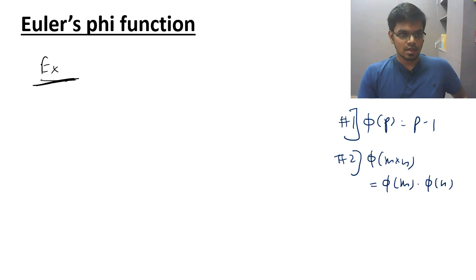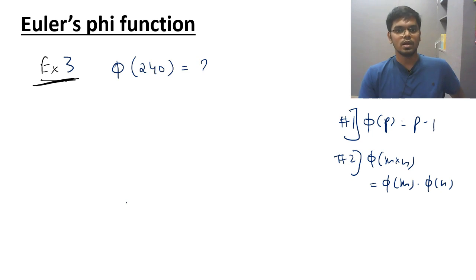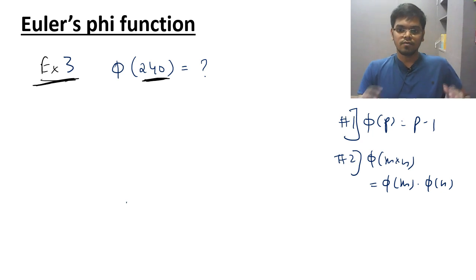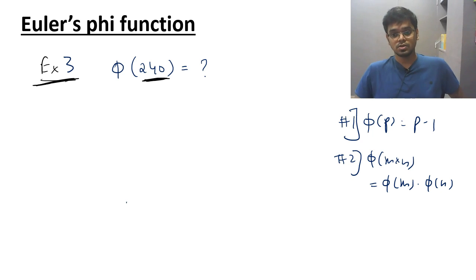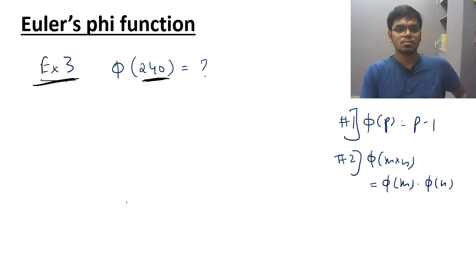Now comes example 3 — a very important example. What if I have phi of 240? To find this value you have to convert 240, which is a non-prime number, into the form of a product of prime numbers. For that you have to do some division.